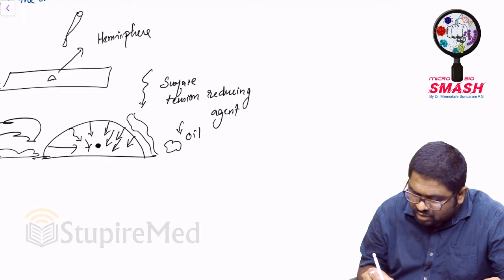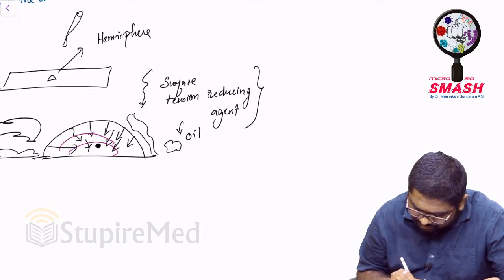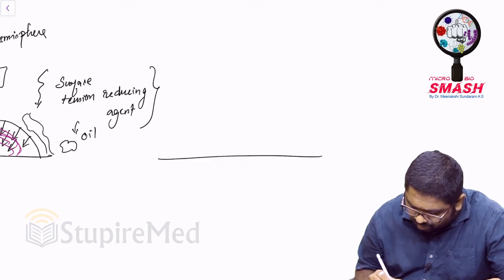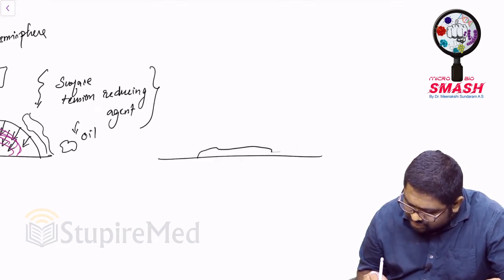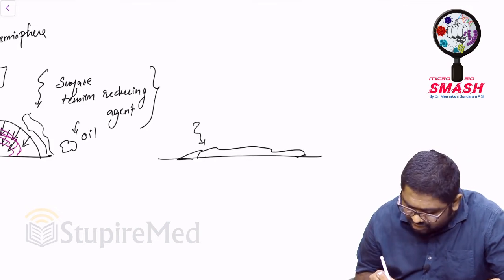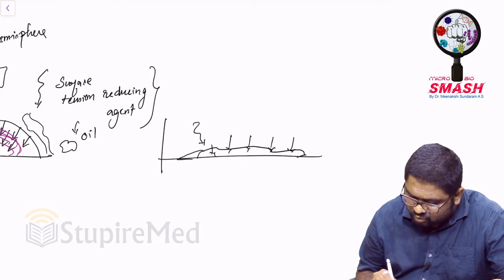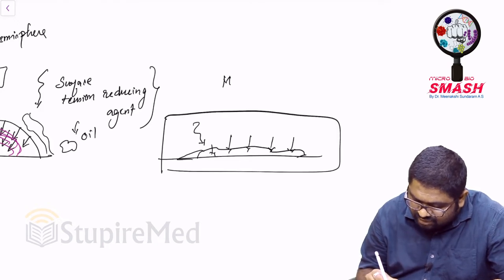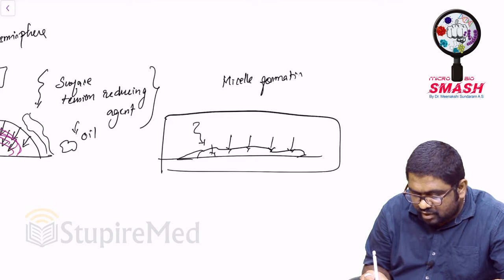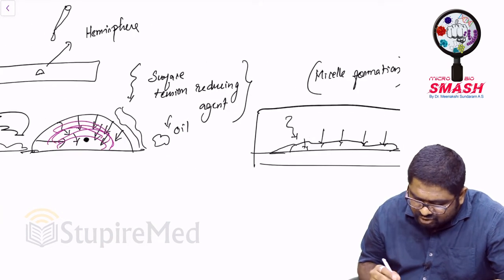But what do I do? I introduce a surface tension reducing agent. This will try to break this particular area. The force is acting on the center, so automatically this particular water droplet who is supposed to be a hemisphere will start flooding like this, because of which now water can enter this area or oil can enter this area. This is one of the reasons for understanding micelle formation also.